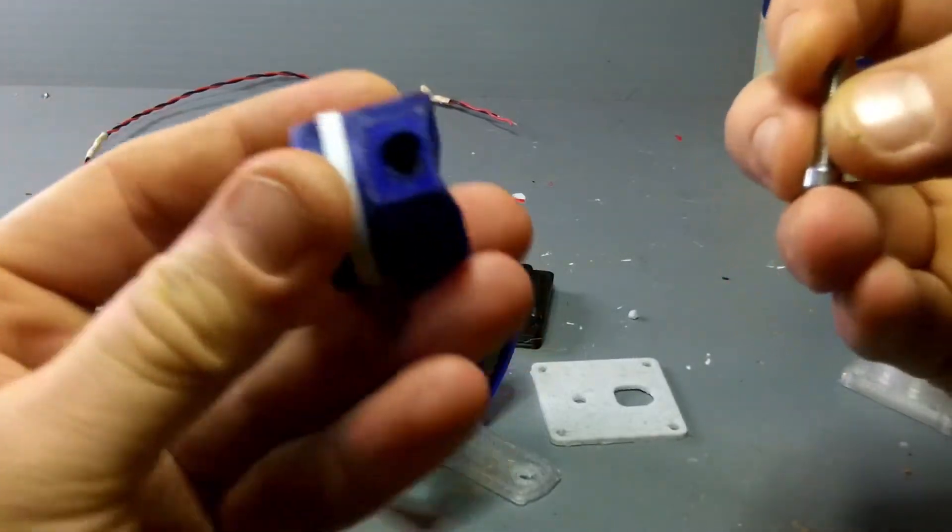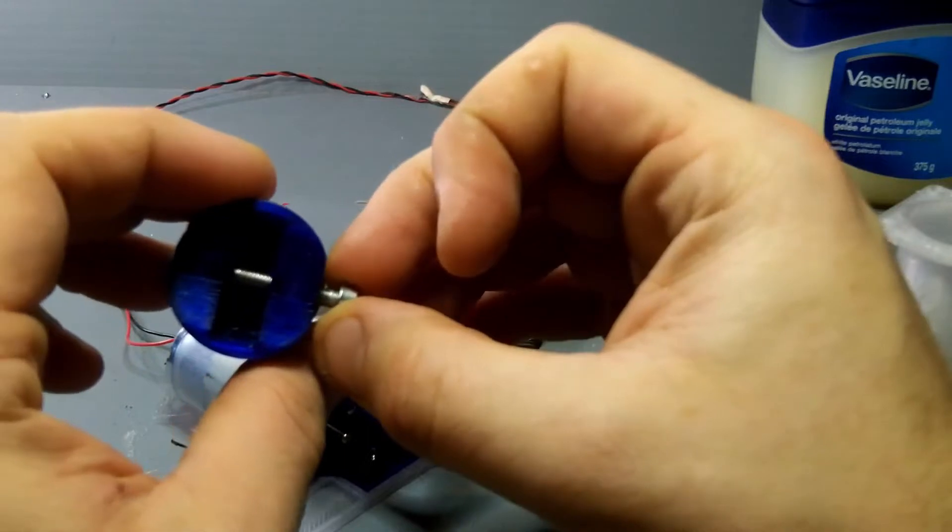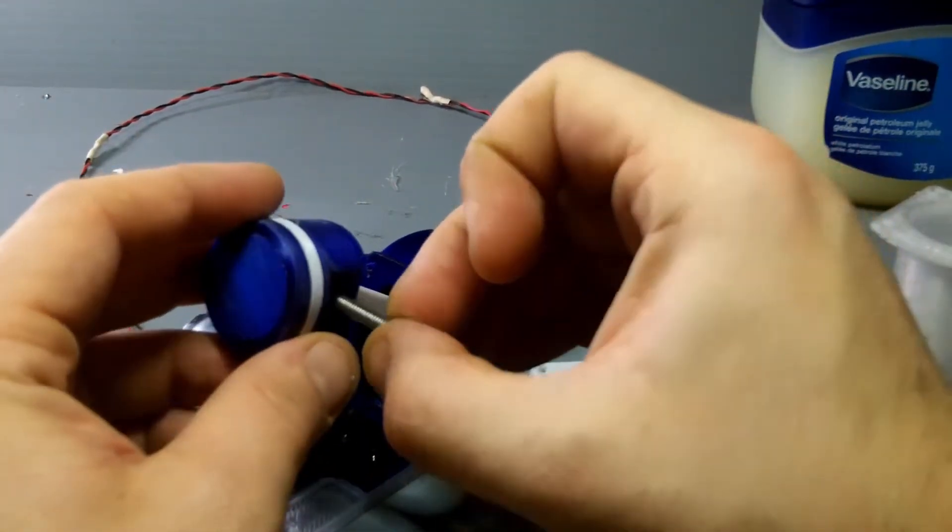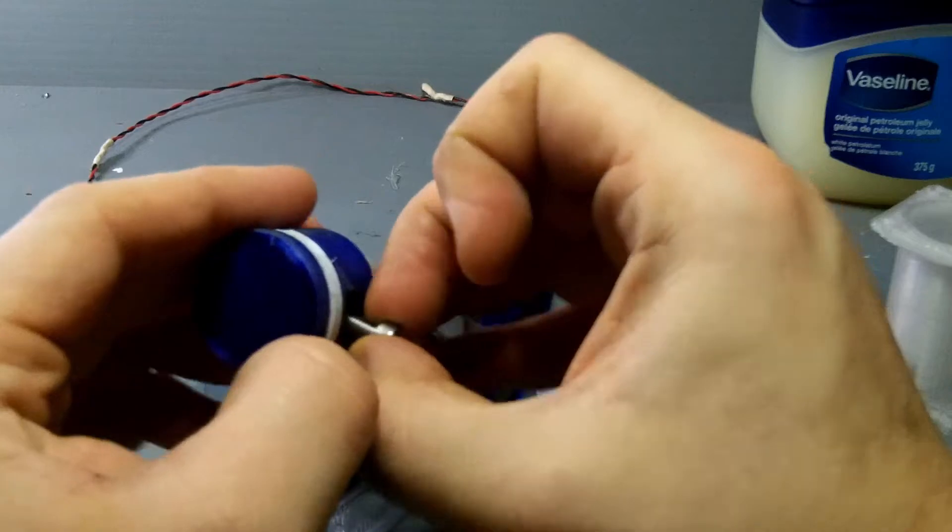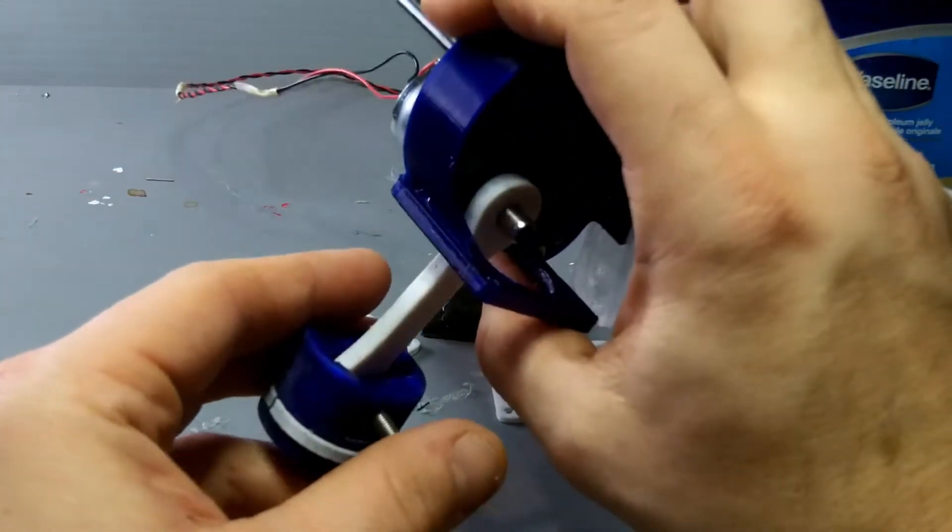Then once you have that all done, the wrist pin is an M4 by 20 cap screw. Now you might have some other screws that'll fit in here, but I designed this specifically for the cap.